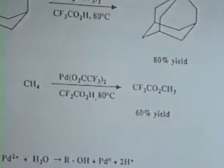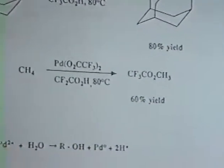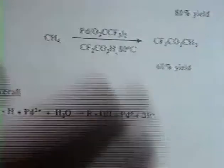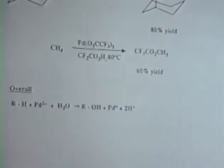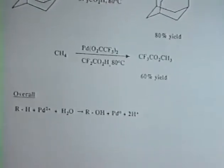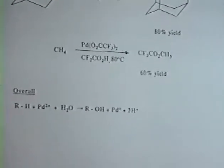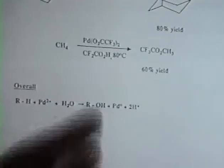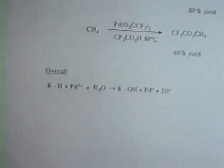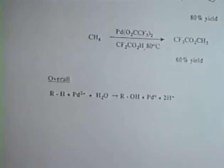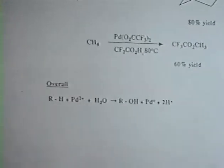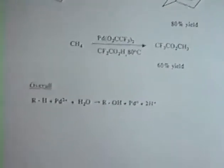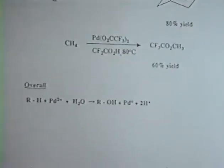This is a somewhat finicky reaction. You need a very pure palladium species to do this reaction, but it does go in reasonable yields. Now, of course, methyl trifluoroacetate can be hydrolyzed to methanol. So, the overall reaction is basically taking an alkane plus palladium 2 plus water going to an alcohol. So, this is a direct conversion of an alkane to an alcohol. Normally, if you wanted to make methanol from methane, you probably would convert methane to CO and hydrogen, and then convert that to methanol, and this would be a direct way of doing it.